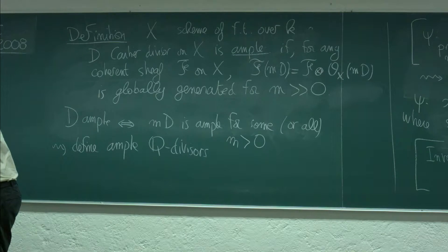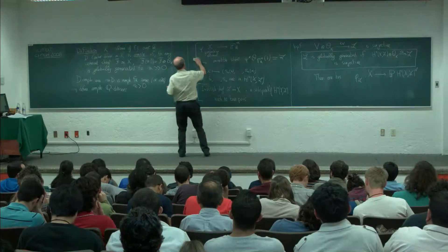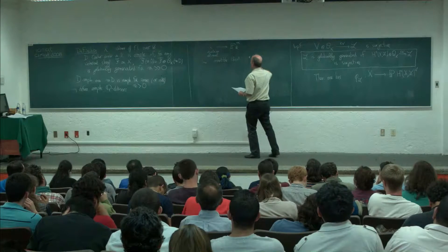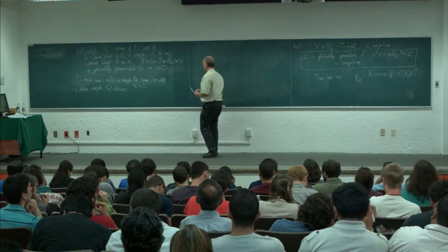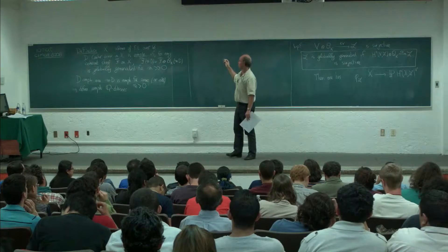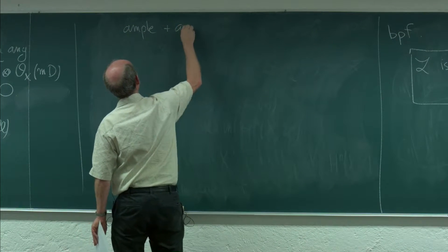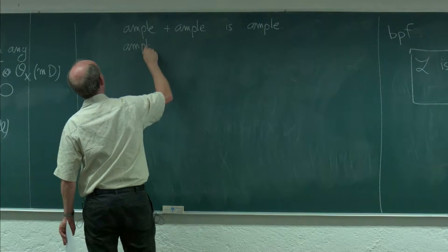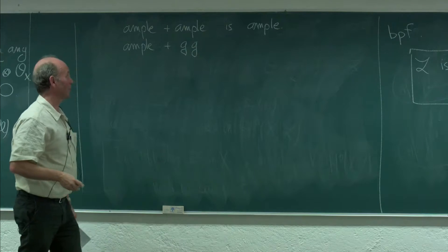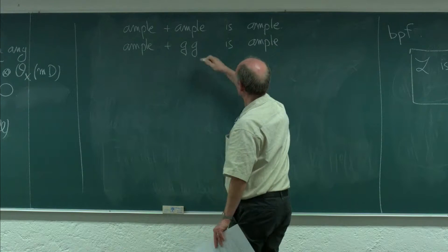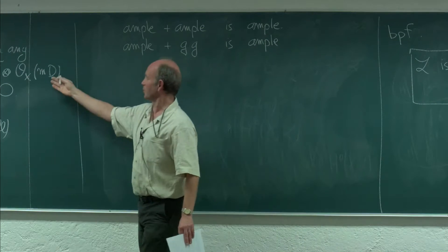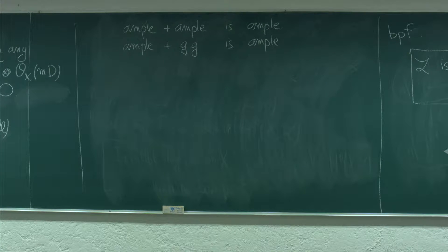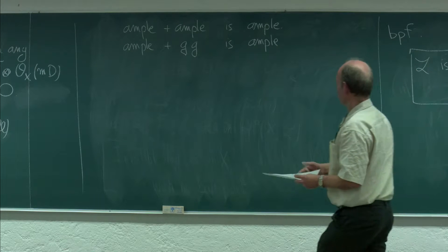To define an ample Q-Cartier divisor, you take a multiple which is an integral Cartier divisor and require it to be ample; this does not depend on the choices made. Let me list properties of ample divisors that are needed. First: ample plus ample is ample. Second: ample plus globally generated is also ample. Note that ample does not imply globally generated — ample implies some multiple is globally generated, but an ample divisor may have no nonzero sections at all.